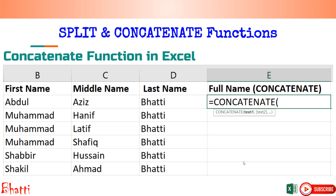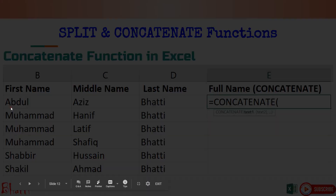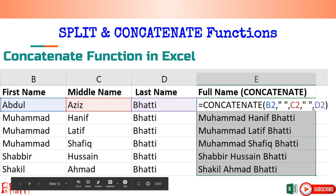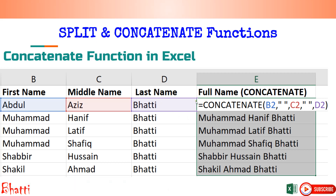I can also combine data based on cell references. From cell 1, cell 2, and cell 3, press Enter and you will get the name separated — because in each column I am providing a double quotation with a space, so the names will have a space between them.